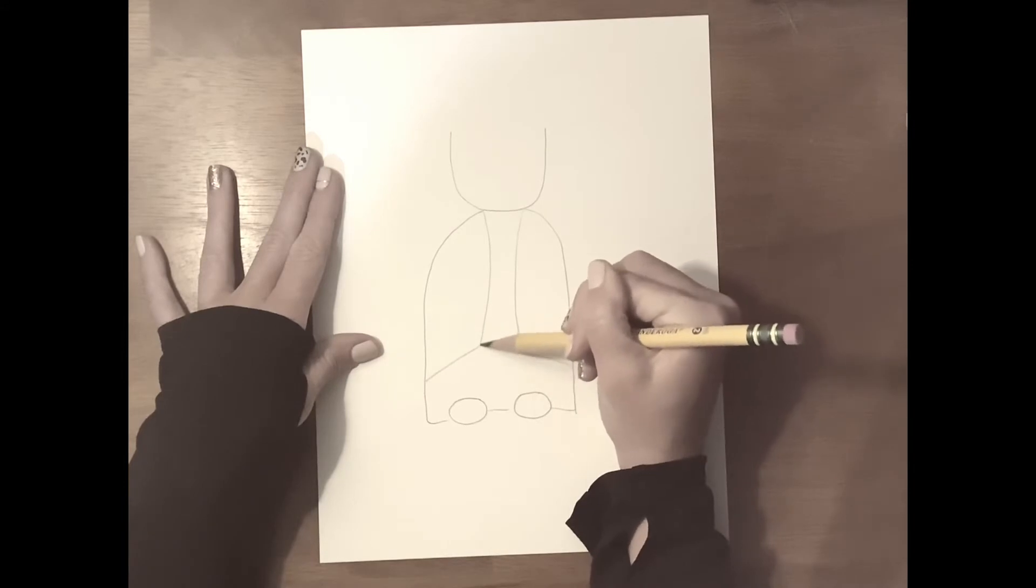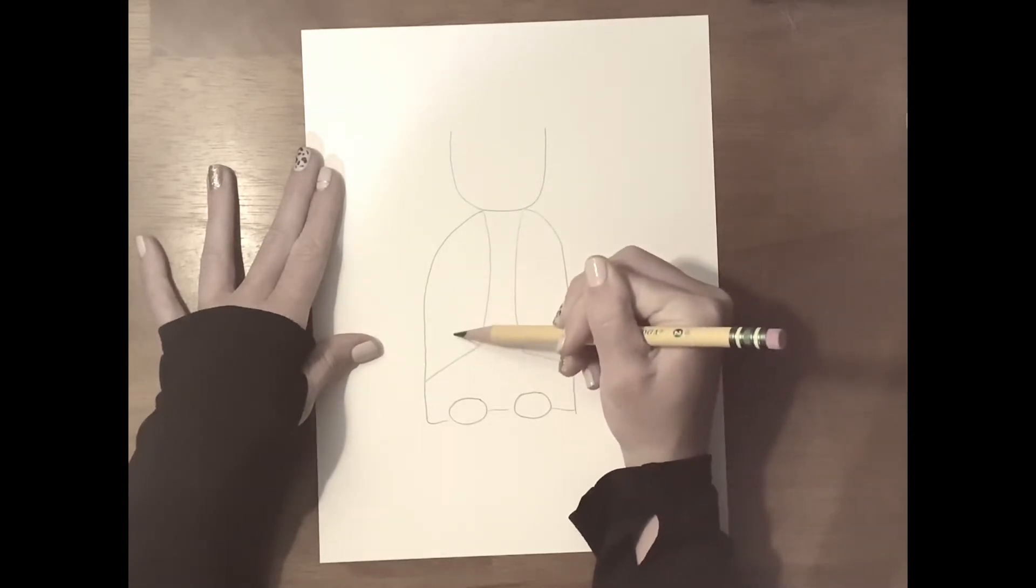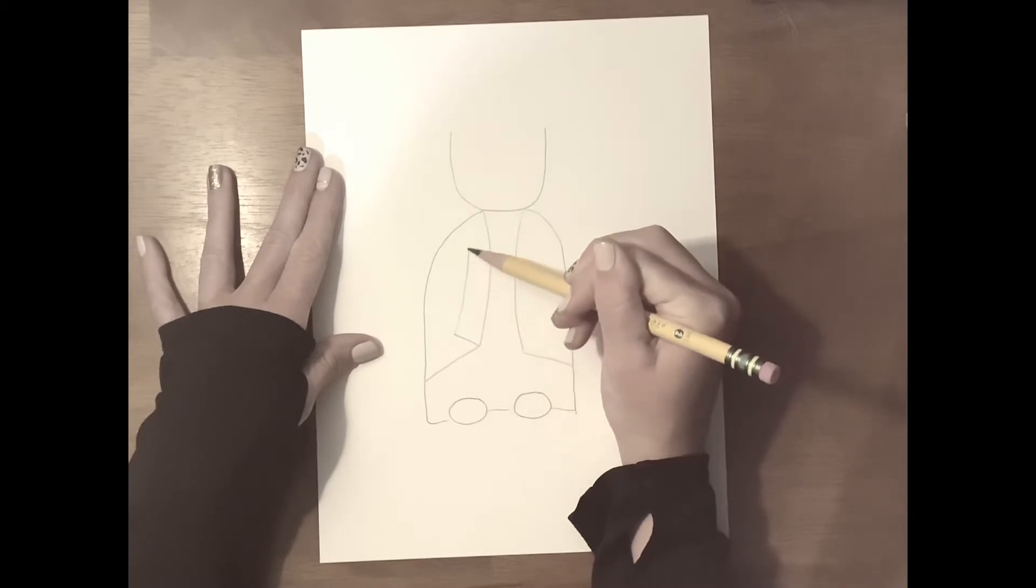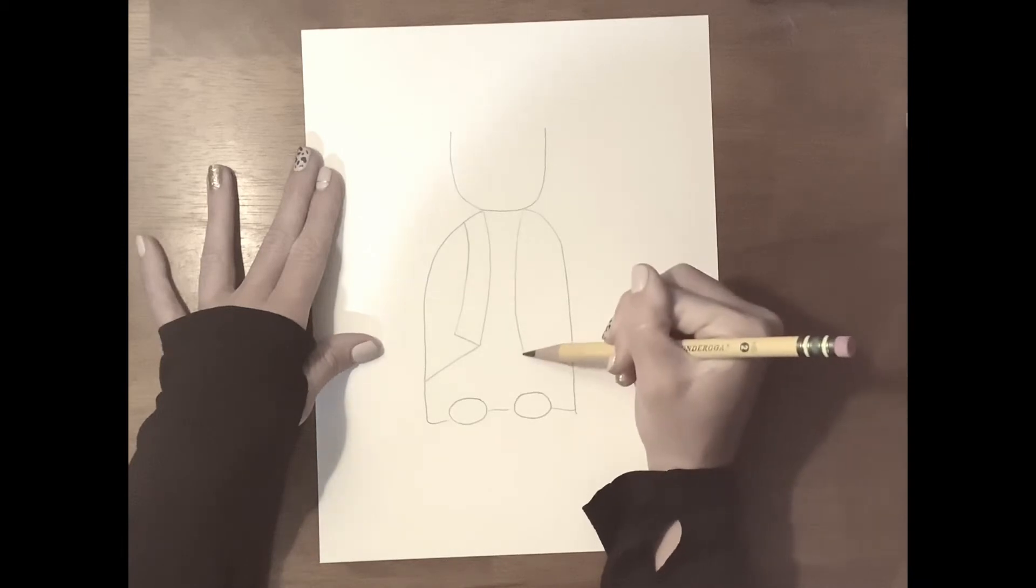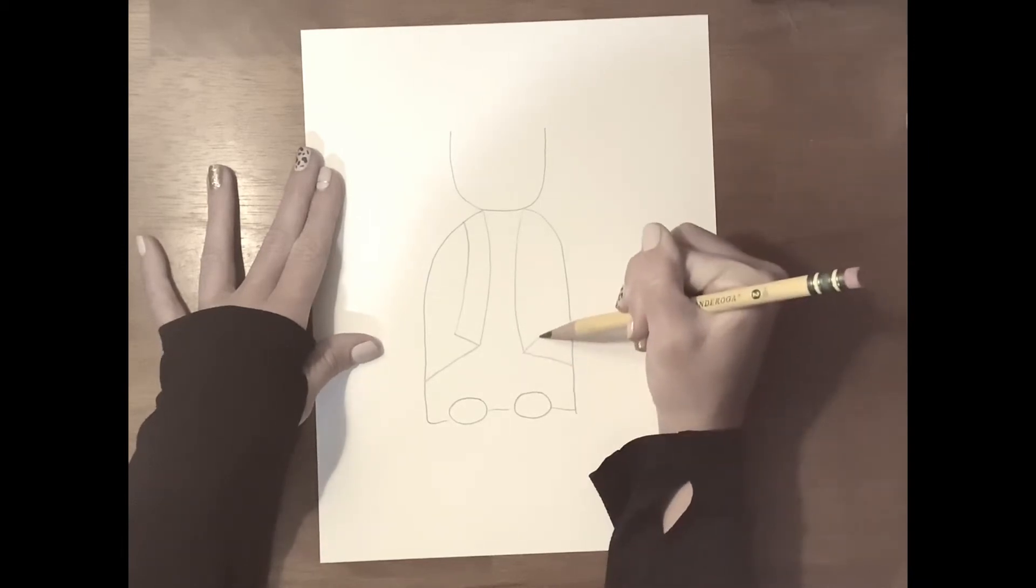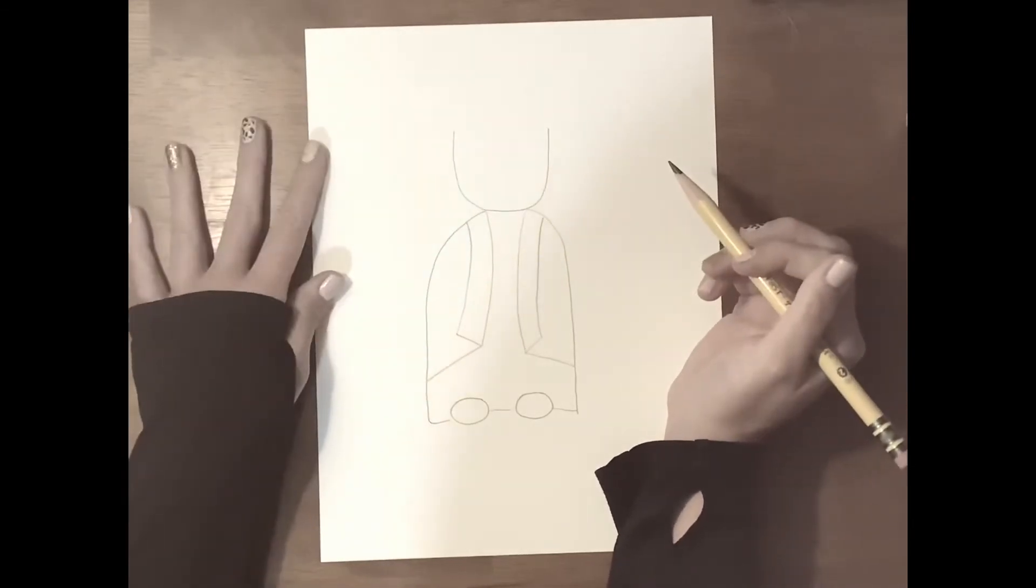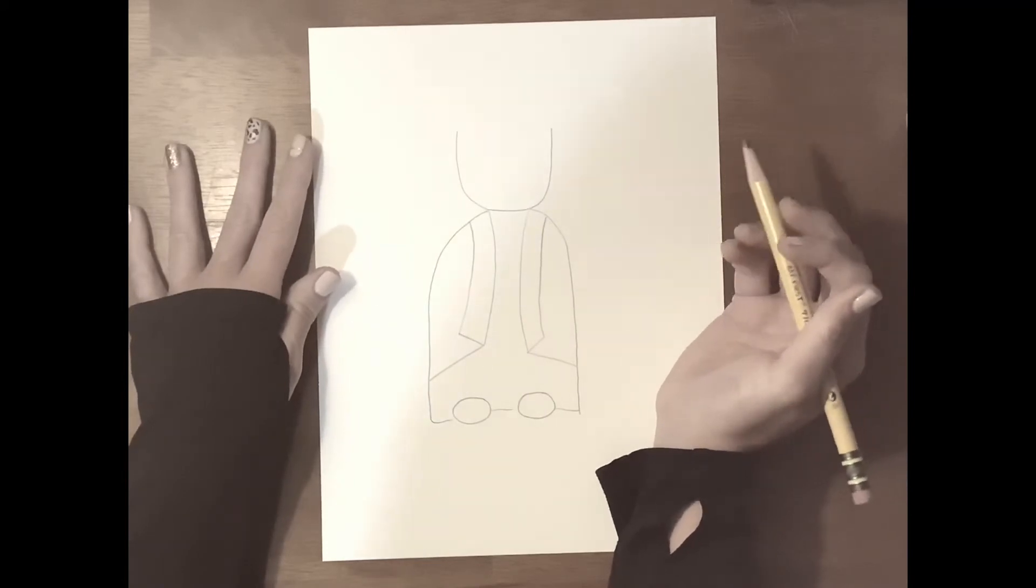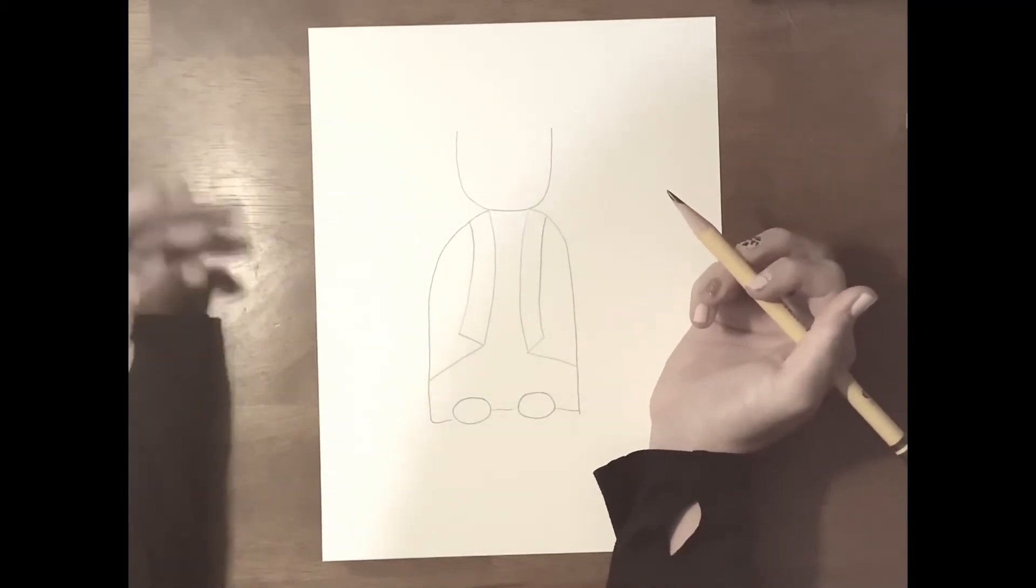Now, at this corner right here, you will draw a straight line coming out. And then a line going up and connecting it. And do the same thing to the other side. It does not have to be perfect. It doesn't matter if you mess up or if it looks a little bit different than your friends. It's okay.